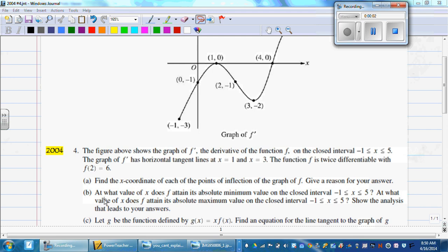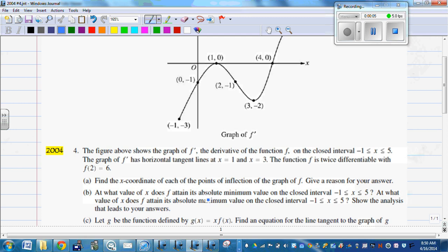All right, so for part B, at what value of X does F attain an absolute minimum from negative 1 to 5? At what value of X does F attain an absolute maximum from negative 1 to 5? And show the analysis that leads to your answers. This one is worth four points: one point for the minimum, one point for the maximum, and one point for each explanation.